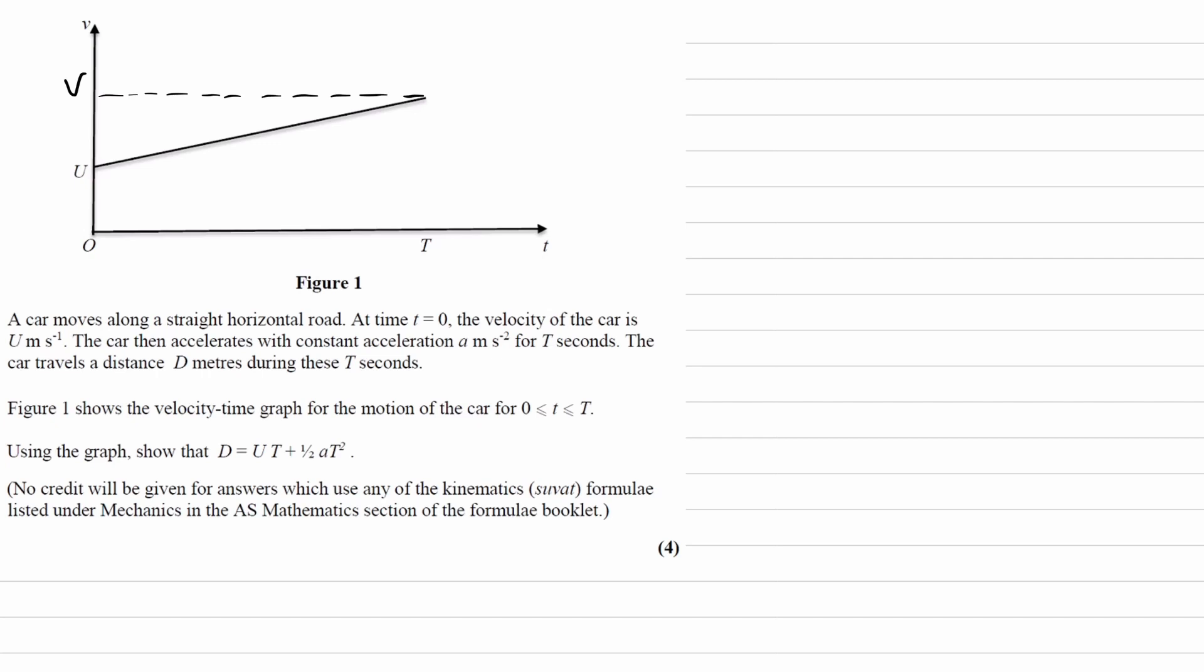Okay, so starting point. If we have a velocity time graph, the gradient of that graph represents acceleration. Acceleration is equal to change in velocity over change in time. So in this case, the acceleration will be capital V minus U, that's the change in velocity, divided by the time which is T. And I'm going to call that equation 1.